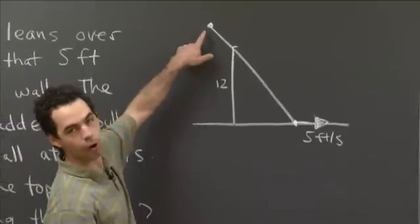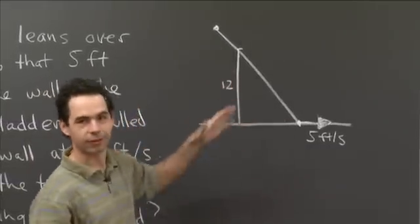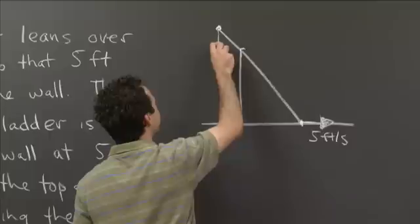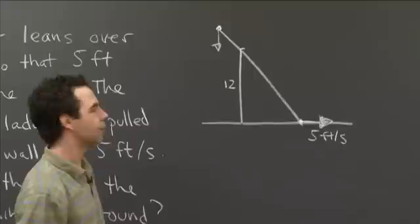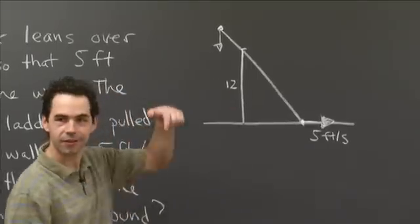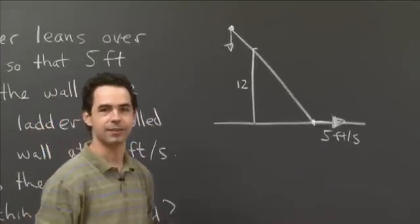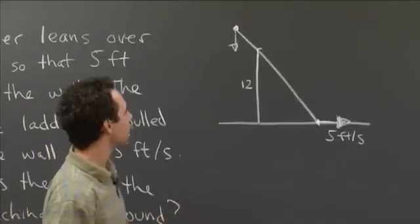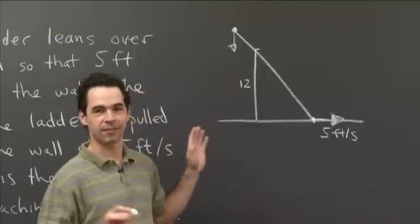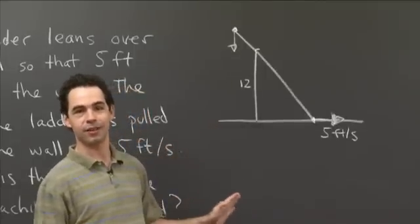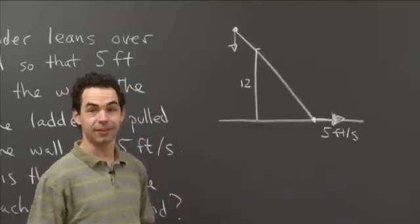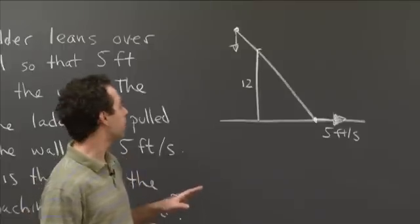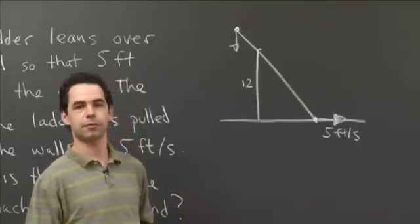We're interested in how fast the top of the ladder is descending — how quickly it's going straight down. So let's talk about the things that don't change. The height of the wall is not changing, and the length of the ladder is not changing. Those are the fixed quantities in this problem. Basically everything else is changing.